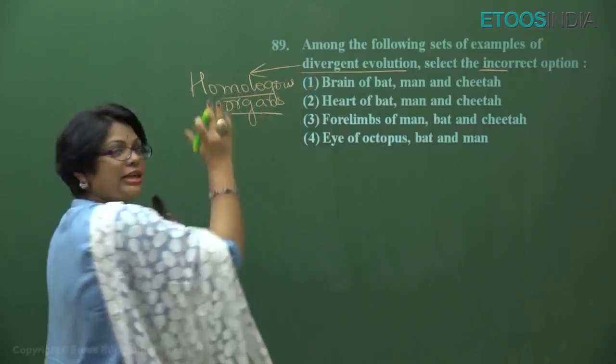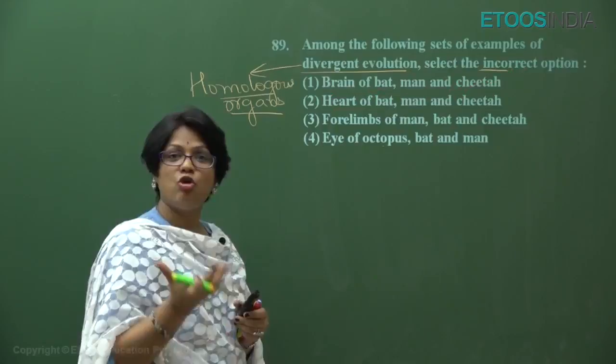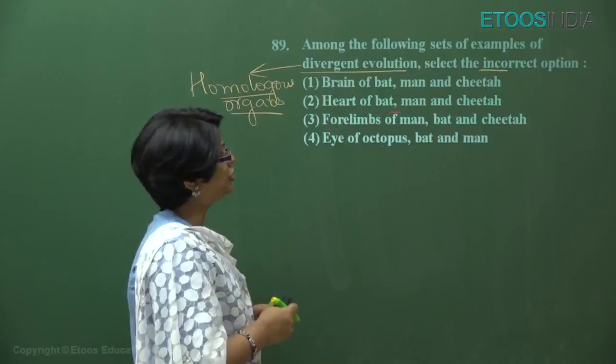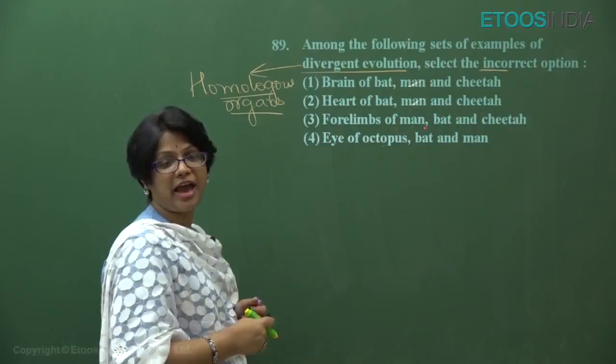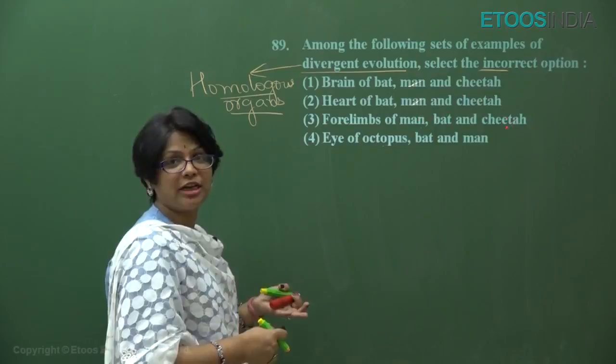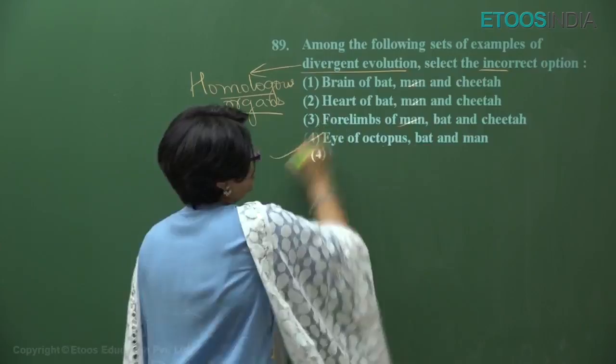We have to find which one is not homologous. The brain of bat, man, and cheetah — all three are mammals, so their brains are definitely homologous. The heart of bat, man, and cheetah — all are mammals, same origin, so homologous. The forelimbs of bat, man, and cheetah — as discussed, evolved for flying, grabbing, and running respectively, but same origin. Brain, heart, and forelimbs of these three animals are all homologous.